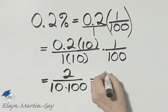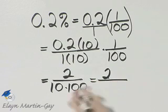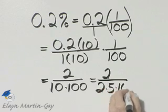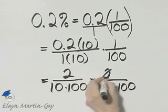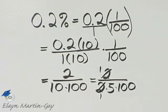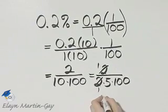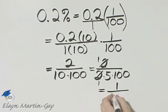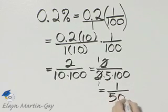If you'd like, you can write it as 2 over, 10 is 2 times 5, and then I have the 100, and you can show the dividing out of the twos. And so what do I have as an ending result? I have 1 over 5 times 100, which is 500.